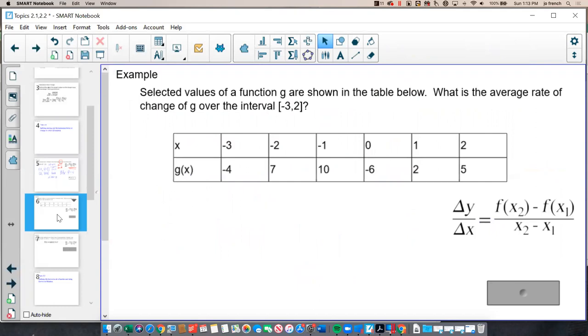If I have a table, and now I'm looking at the interval from negative 3 to 2, finding the average rate of change of g of x.